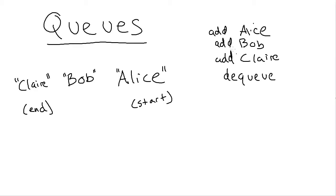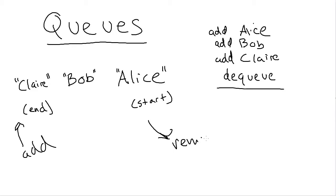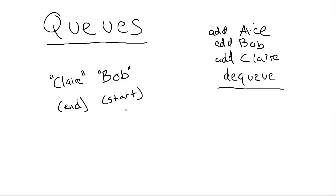Java's built-in stack class uses push and pop. For queues, Java uses 'add' for enqueue; the dequeue method name differs. But either way, if we've added Alice, Bob, and Claire, Alice is at the start, Bob is in the middle, Claire at the end. If we dequeue, Alice would be removed — we add on one side and remove from the other. That's the key thing that makes this a queue.